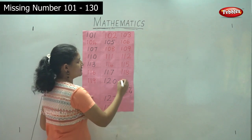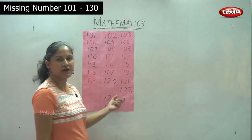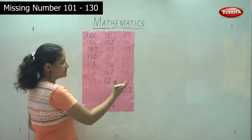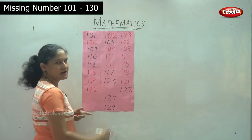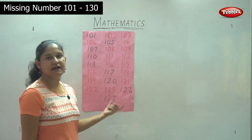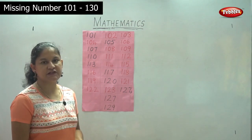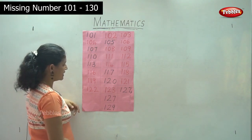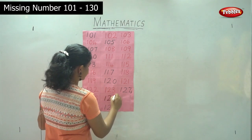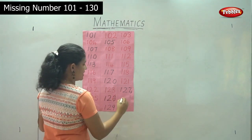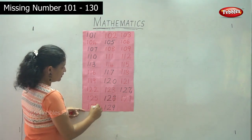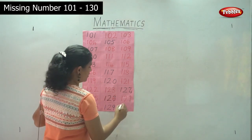After 120 comes 121, then 122. The next blank space will be 123. We already have 124, so the next number will be 125, then 126, then 127, then 128, then 129. And the last number will be 130.